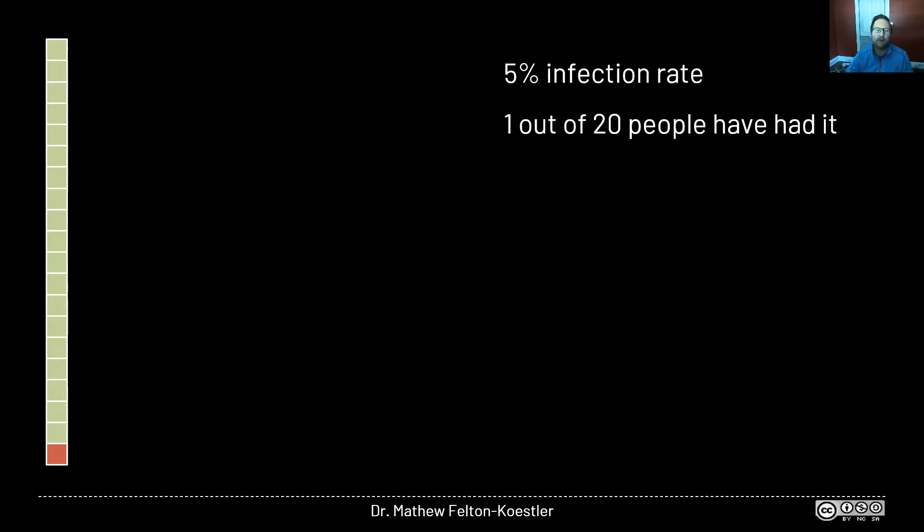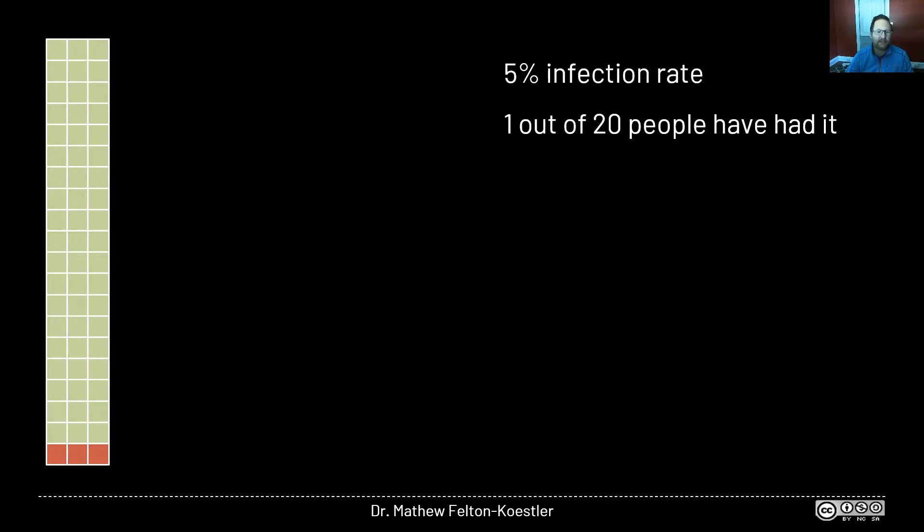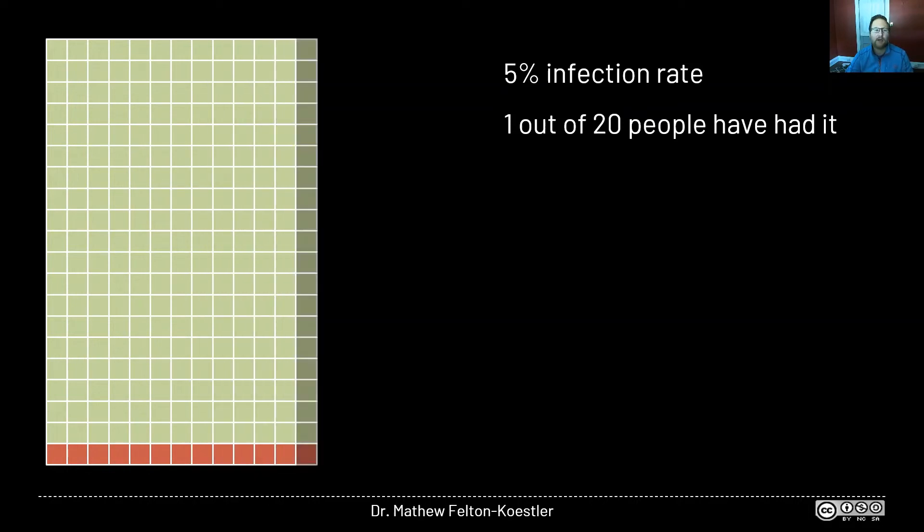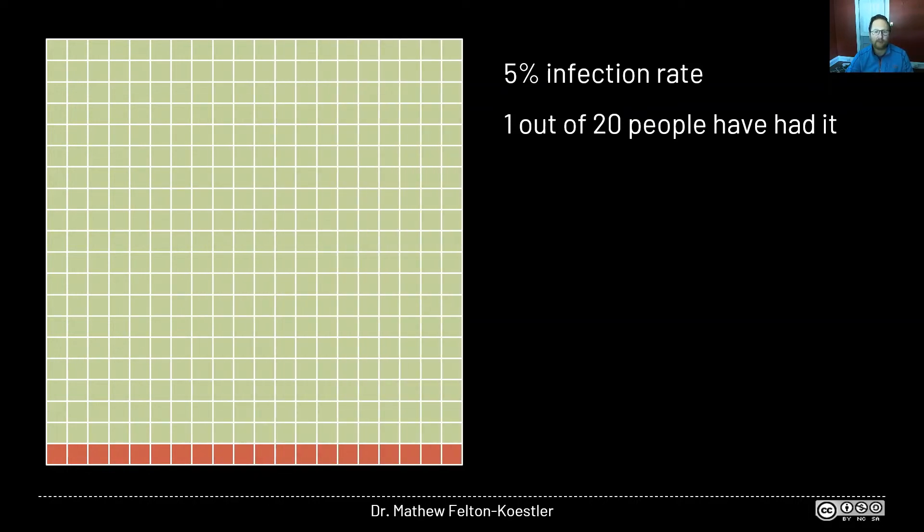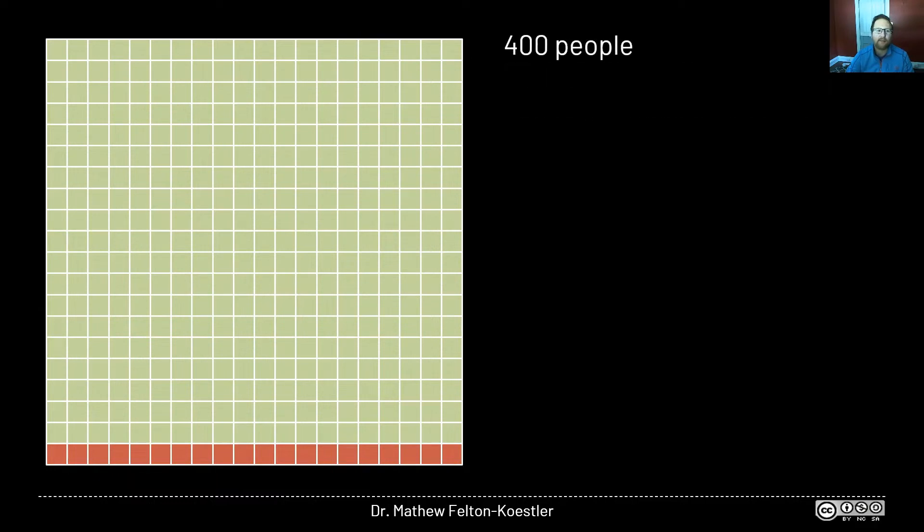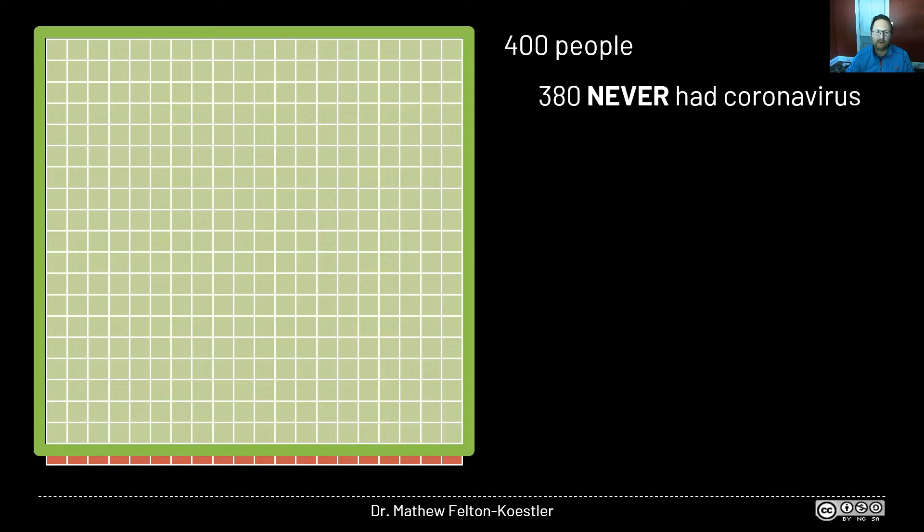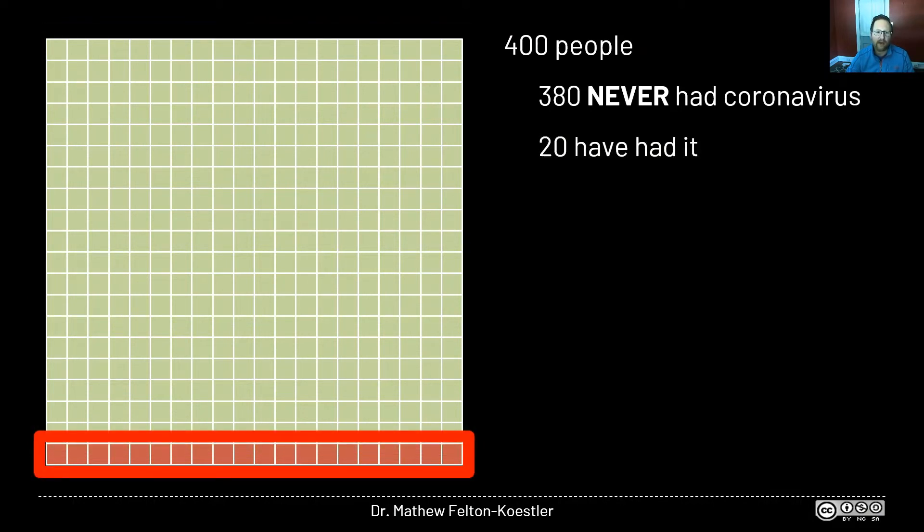Alright, to think about this problem, we're going to want to imagine more than 20 people. So I can add another 20 people, so now we have 40 total. Now we have 60, 80, 100. And I'm going to keep adding groups of 20 until we're up to 400 people total. And you can see, I kept along the bottom, 1 out of every 20 people still has the coronavirus, or has had it at some point. So we've got 400 people here, 380 of whom have never had the virus, and 20 of whom have had it.